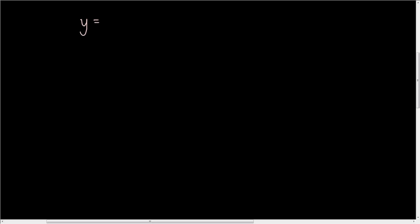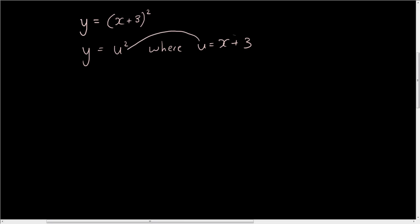The chain rule works on equations where we have a function embedded within another function. So let's say we have y equals x plus 3 squared. I can rewrite this as y equals u squared where u is equal to x plus 3. So instead of having one function I now have two functions, and the output of my second function u is the input of my first function.